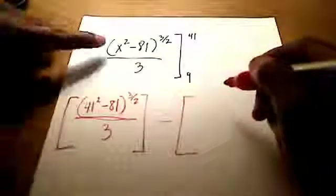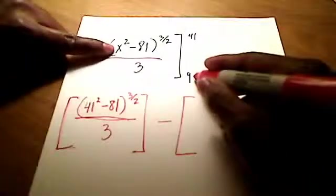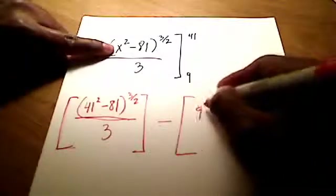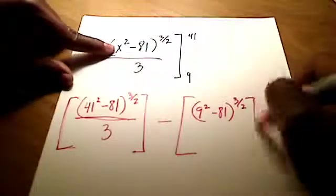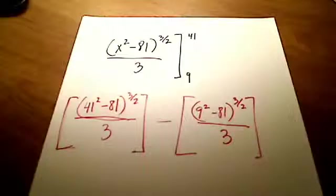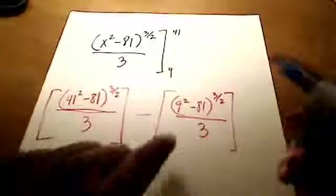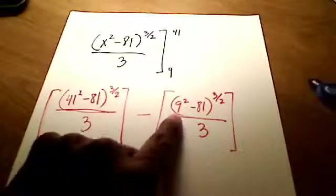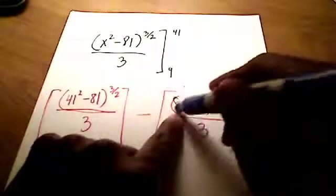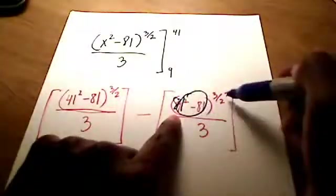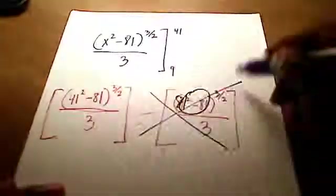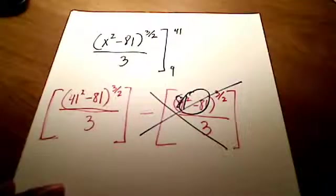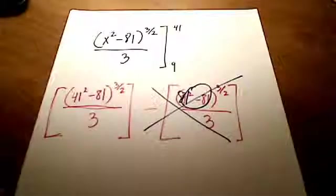Minus, and now in place of x, I'm going to put in the lower limit of 9. So that's 9 squared minus 81 quantity raised to the 3 halves all over 3. Well, I hope you see, although it looks kind of nasty, it's really not that bad. Because look, let's do this one first. This is easy. 9 squared is 81, and 81 minus 81 is 0, and 0 raised to whatever is still 0, and divided by 3 is still 0. So this whole second term really just kind of wipes out. Just turns into a 0. Minus 0 isn't going to change our answer.